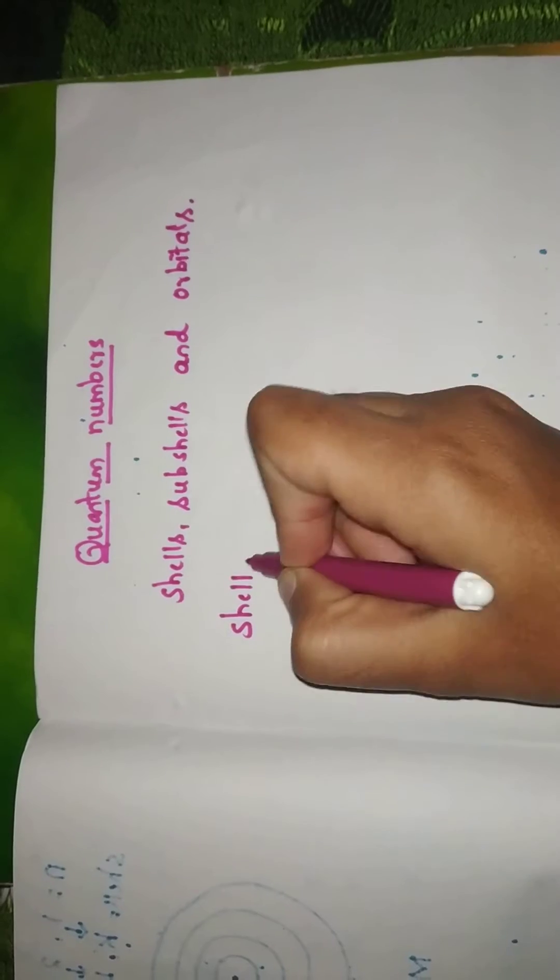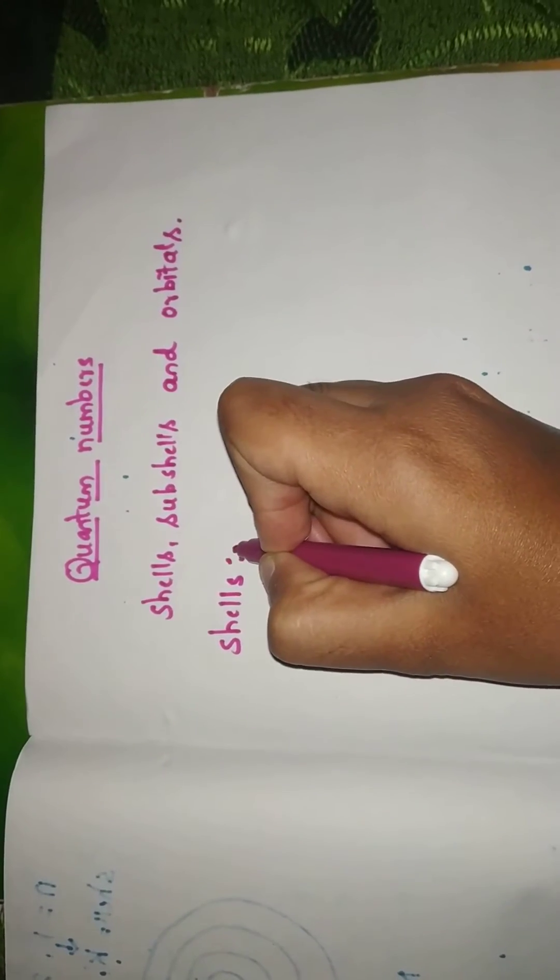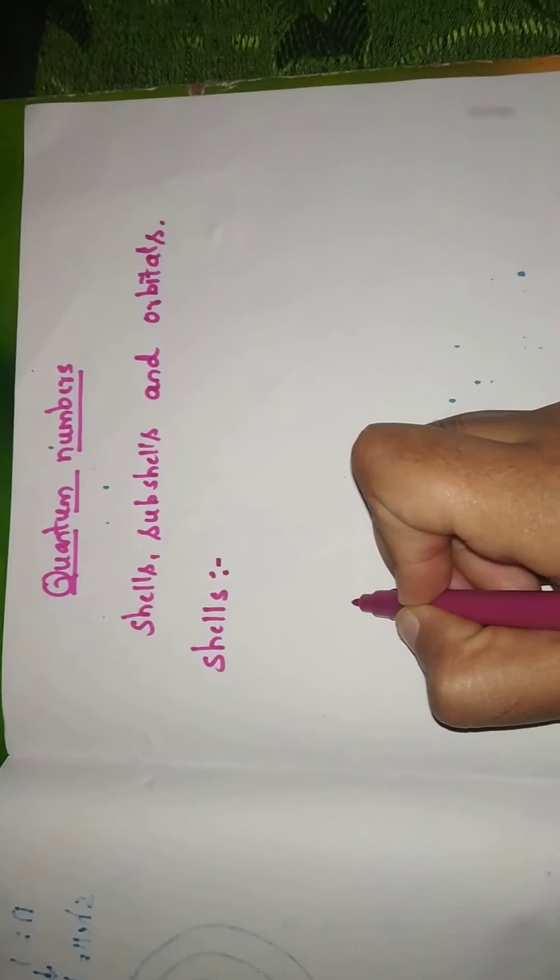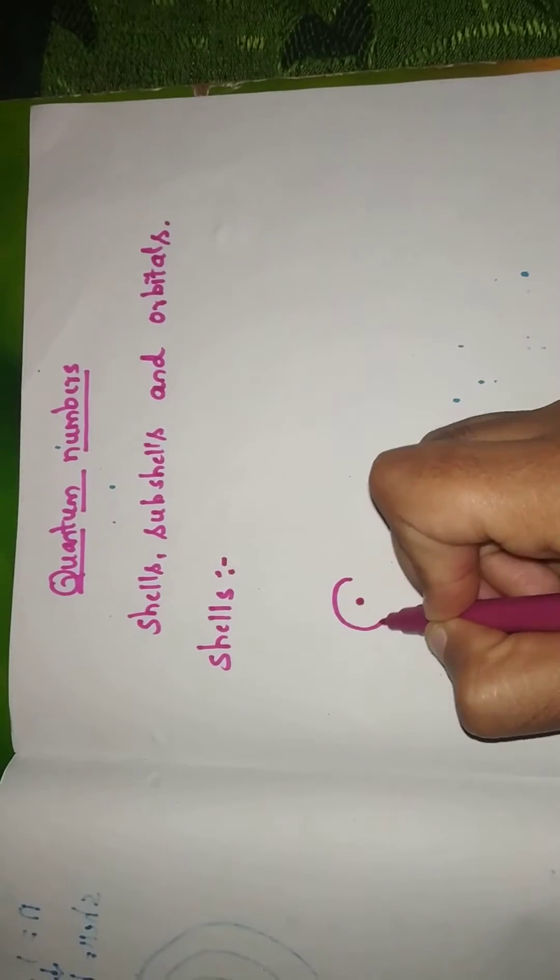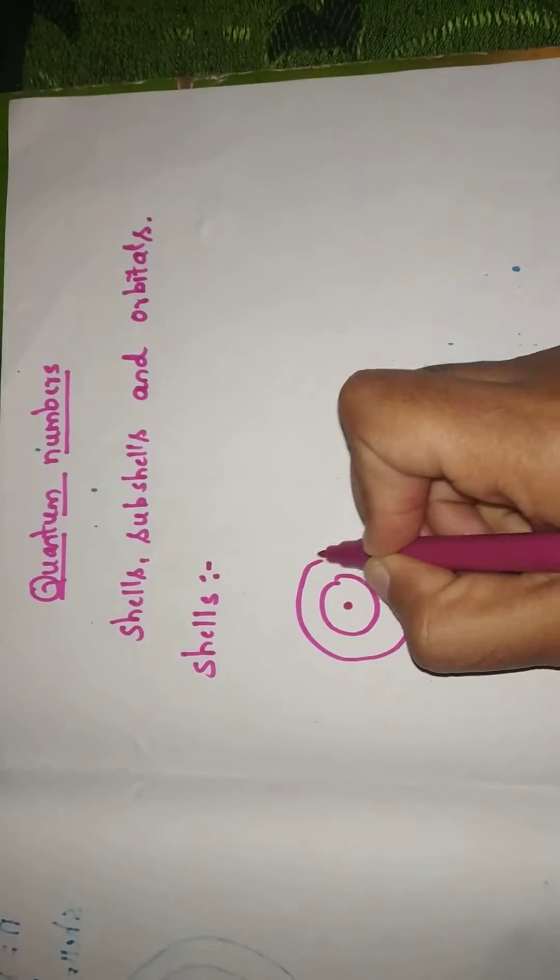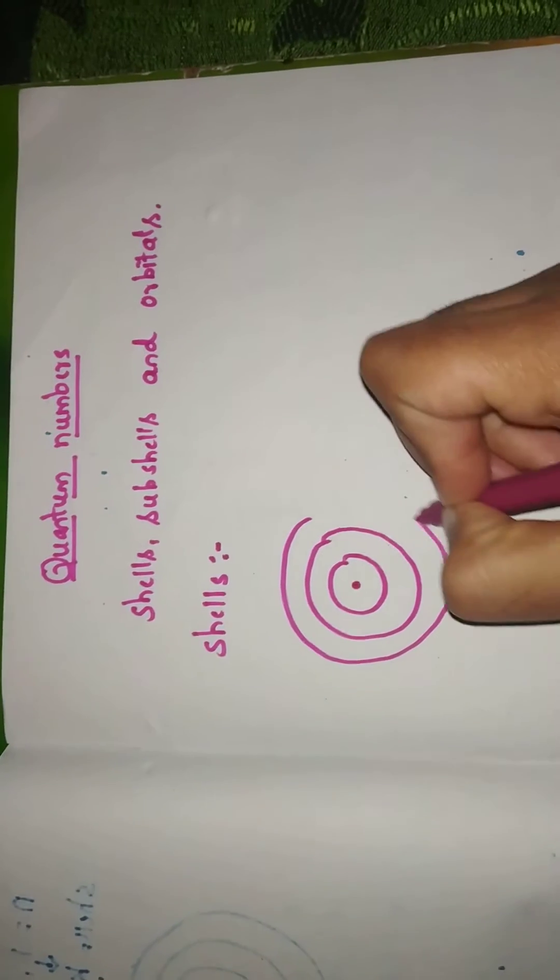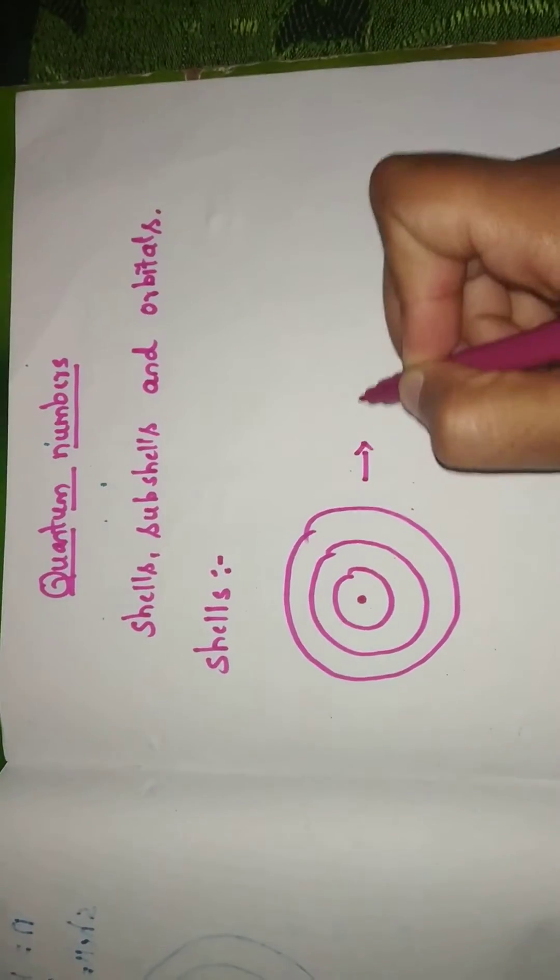What are shells? If you consider this as a nucleus, electrons are supposed to revolve around the nucleus in definite circular paths. These are called as shells.